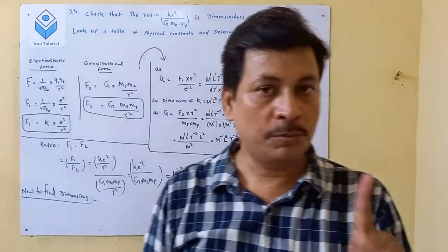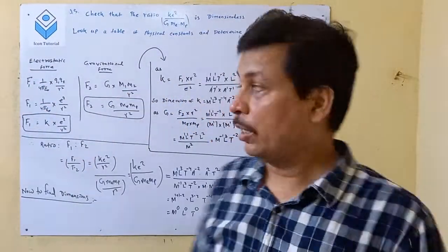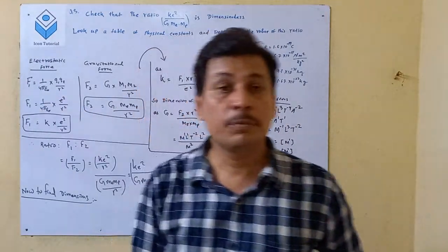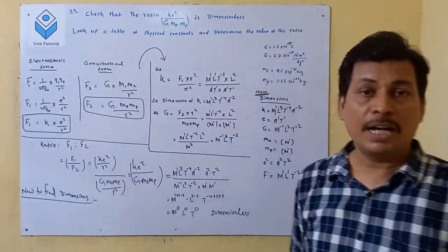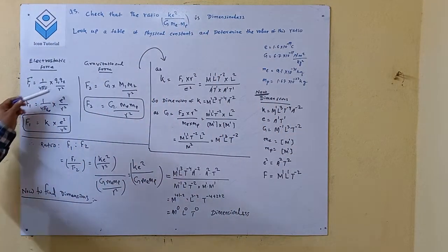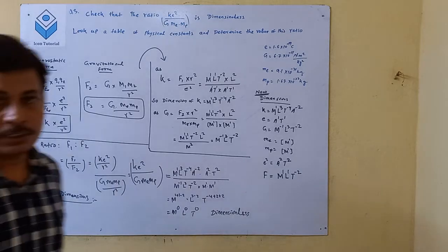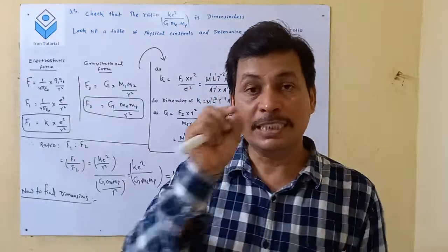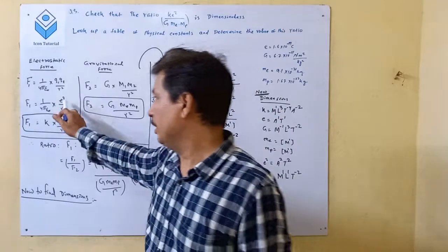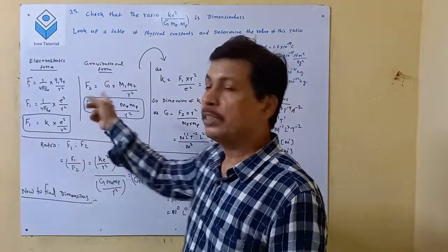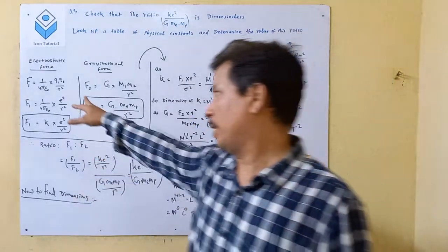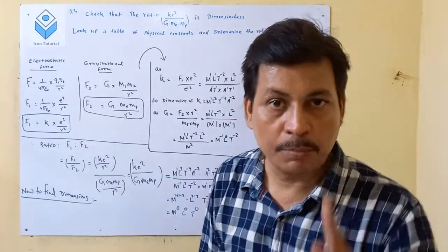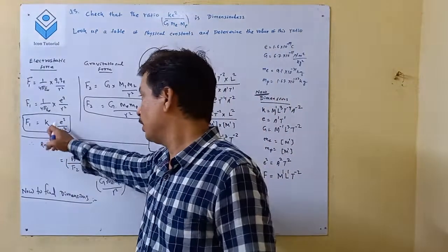We consider the electrostatic force F1 and the gravitational force. The electrostatic force F1 is equal to (1/4πε₀) × q1·q2 / r². Since q1 and q2 are both charges — the charge of one electron — we put q1 = q2 = e. So F1 = k·e² / r², where k = 1/4πε₀.